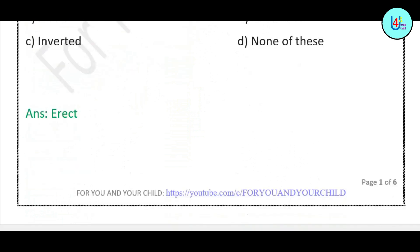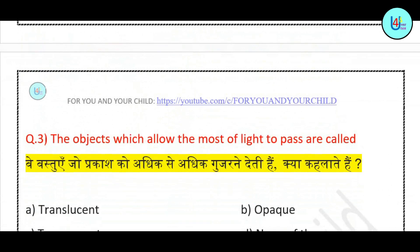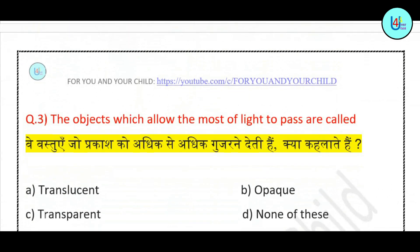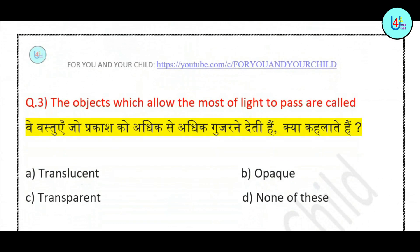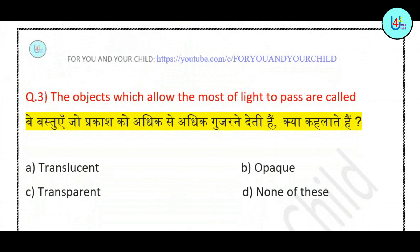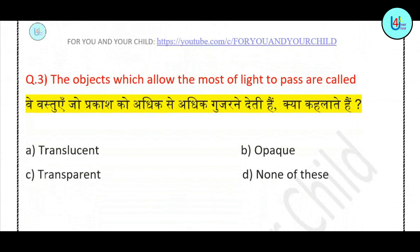Question number 3: The objects which allow most of the light to pass are called — translucent, opaque, transparent, or none of these? Correct answer is: transparent.